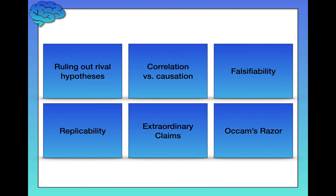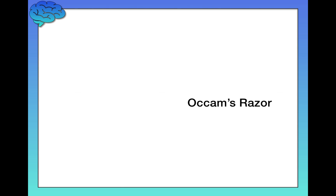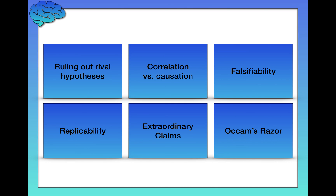One last scientific thinking principle: Occam's razor, also known as the principle of parsimony. Occam's razor states that if two explanations account equally well for a phenomenon, the simpler — more parsimonious — explanation should be chosen. In science, we value simplicity. Of course, if a more complicated explanation does a much better job of explaining findings, we can go with that one. But in general, if two explanations do an equally good job, we might as well pick the simpler one. Those are the six principles of scientific thinking, and I encourage you to keep these in mind and evaluate what you're hearing along these dimensions as we progress through this video series.